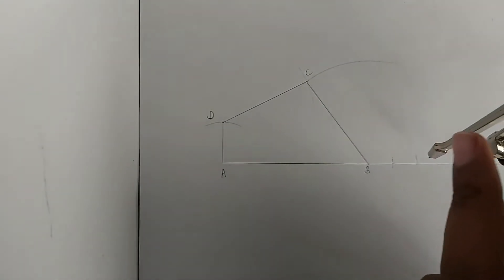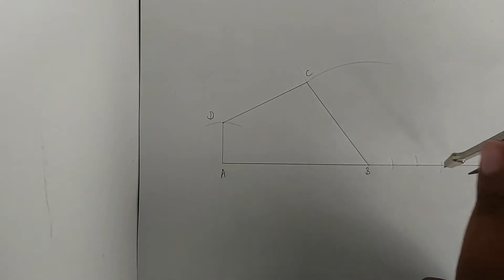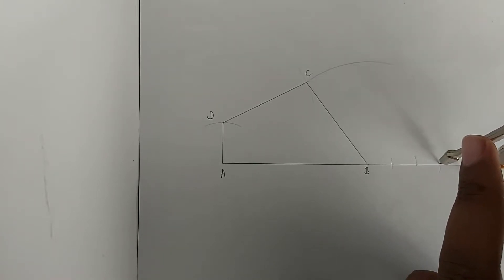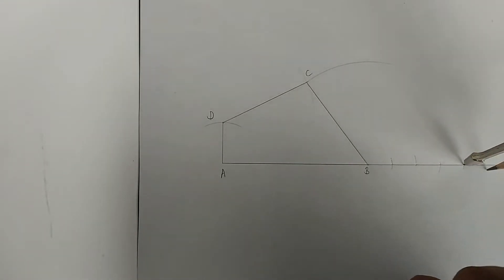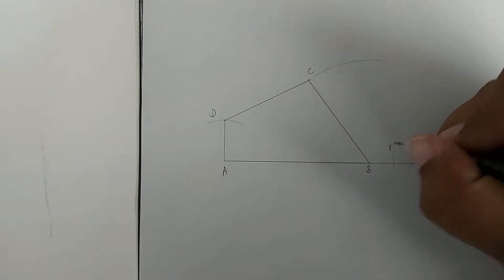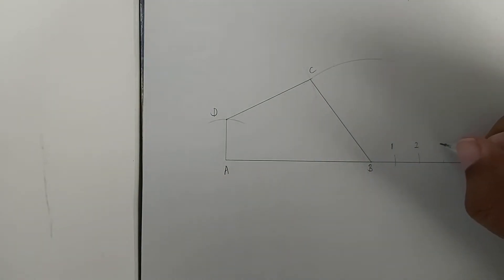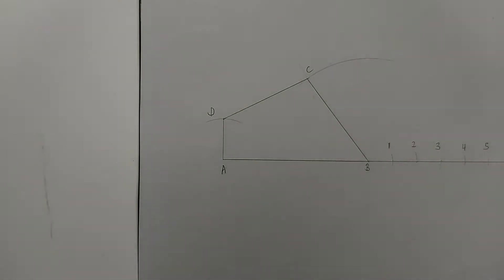One, two, three, four, and five. The reason why it's five is because the last number in the ratio is five. You should have five arcs like this, all the same measurement apart. That's the measurement you open to on your compass — that's why I recommend using a small measurement.